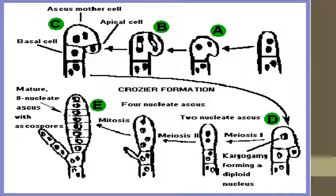Initially, the hypha contains nuclei of different types where a crozier-like formation can be seen. The nuclei divide equally and migrate into the crook-like structure. After migration, a septum is formed. Then meiosis I occurs — two become four. After meiosis II — four become eight. Now you can see 8 ascospores in an ascus. This is crozier formation, taking place in the short interface between plasmogamy and karyogamy, otherwise called ascospore formation or free cell formation.